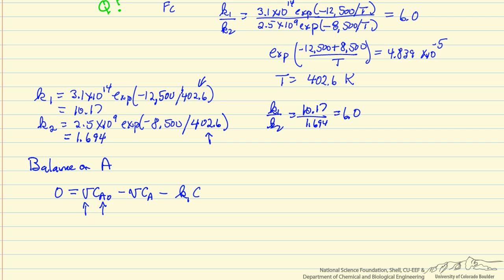The reason for the change is because we have two reactions. k1 times CAV, rate constant, concentration, volume, and k2 CAV. Now we know all the numbers except for CA, so we can solve this now for CA.